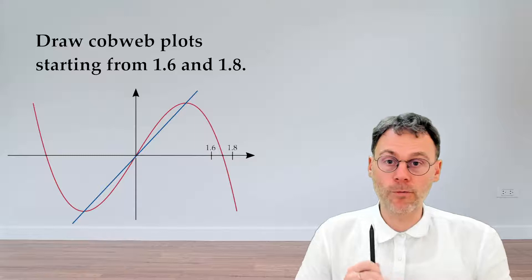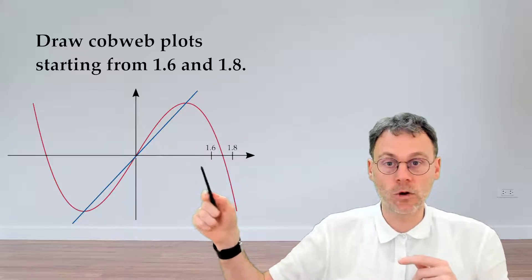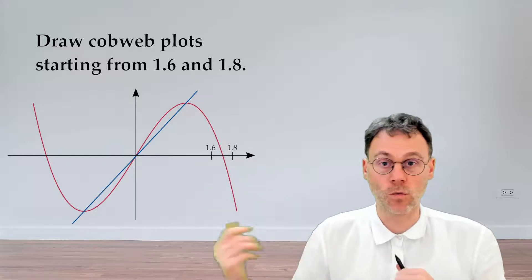This is an exercise on cobweb plots. Use a cobweb plot to try and figure out the orbits of the points 1.6 and 1.8.